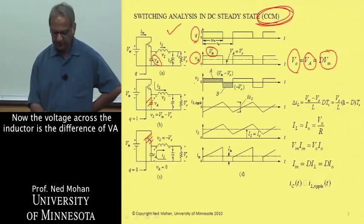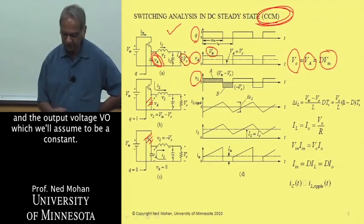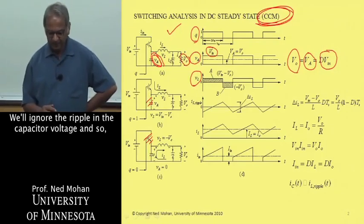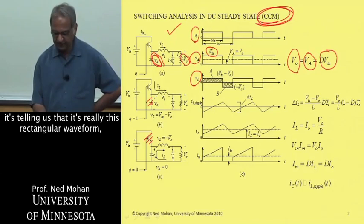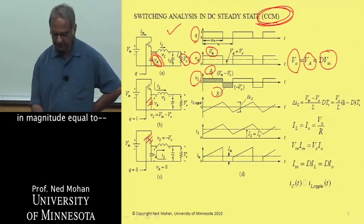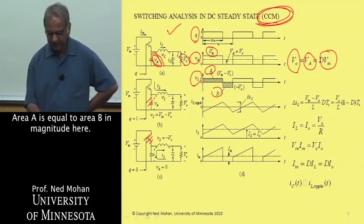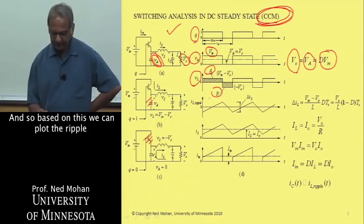Now, the voltage across the inductor is the difference of VA and the output voltage V0, which we'll assume to be a constant. We'll ignore the ripple in the capacitor voltage. And so it's really this rectangular waveform, and since its average is zero, this area B is in magnitude equal to area A here.